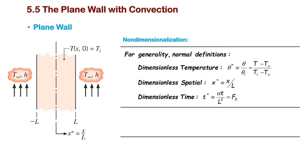We introduced dimensionless variables: dimensionless temperature, dimensionless position, and dimensionless time. For position, we normalize with the length scale L. For temperature, we normalize with the temperature difference. For dimensionless time, we use the Fourier number, defined as αt over L², which comes naturally from the heat diffusion equation to make it dimensionless.